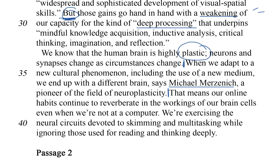We know that the human brain is highly plastic — and there's that vocabulary word from the survey step. Neurons and synapses change as circumstances change. When we adapt to a new cultural phenomenon, including the use of a new medium, we end up with a different brain, says Michael Merzenich, a pioneer in the field of neuroplasticity. Our online habits continue to reverberate in the workings of our brain cells even when we're not at a computer. We're exercising the neural circuits devoted to skimming and multitasking while ignoring those used for reading and thinking deeply. Overall, this passage says the web is wrecking our capacity for deep thinking.